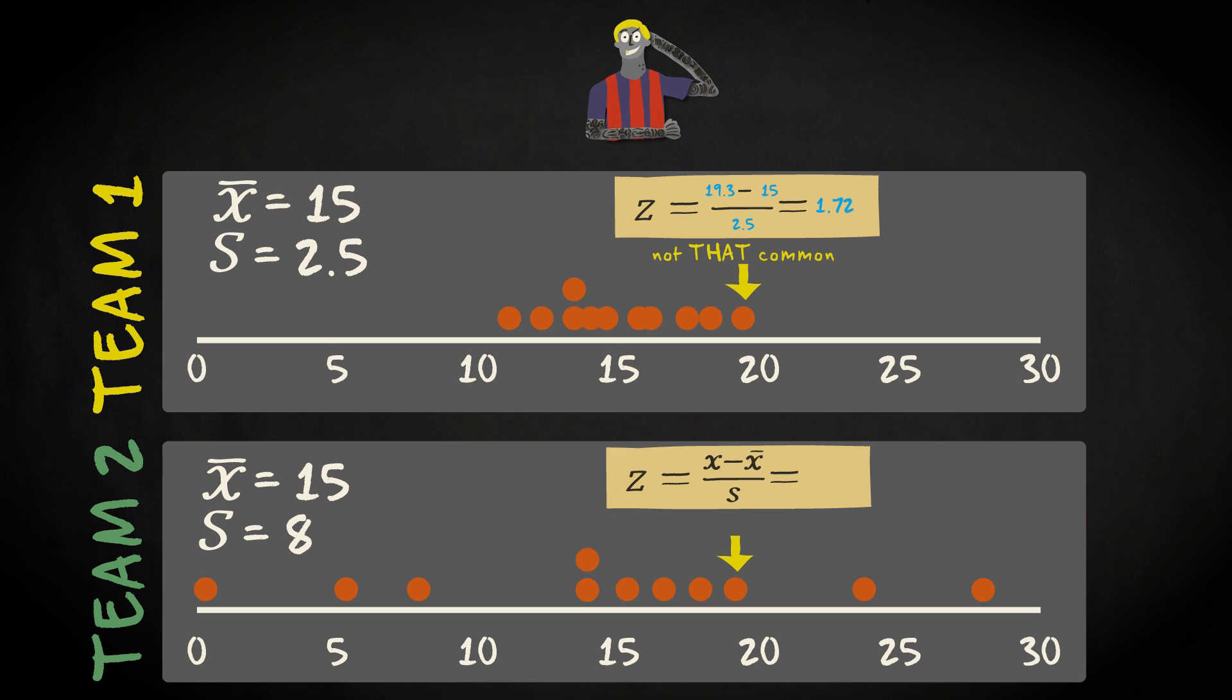In team 2, the value of 19.3 corresponds with a z-score of 19.3 minus 15 divided by 8 equals 0.54. This indicates that in team 2, the value of 19.3 is much more common than in team 1.